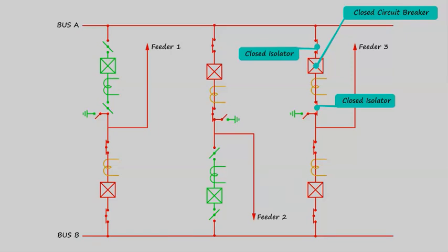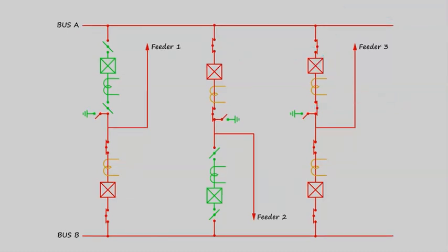You see just after switching on this circuit breaker, means circuit breaker toward bus A, the feeder gets now connected to both of the buses. Means now that both buses are sharing the load of feeder 3.